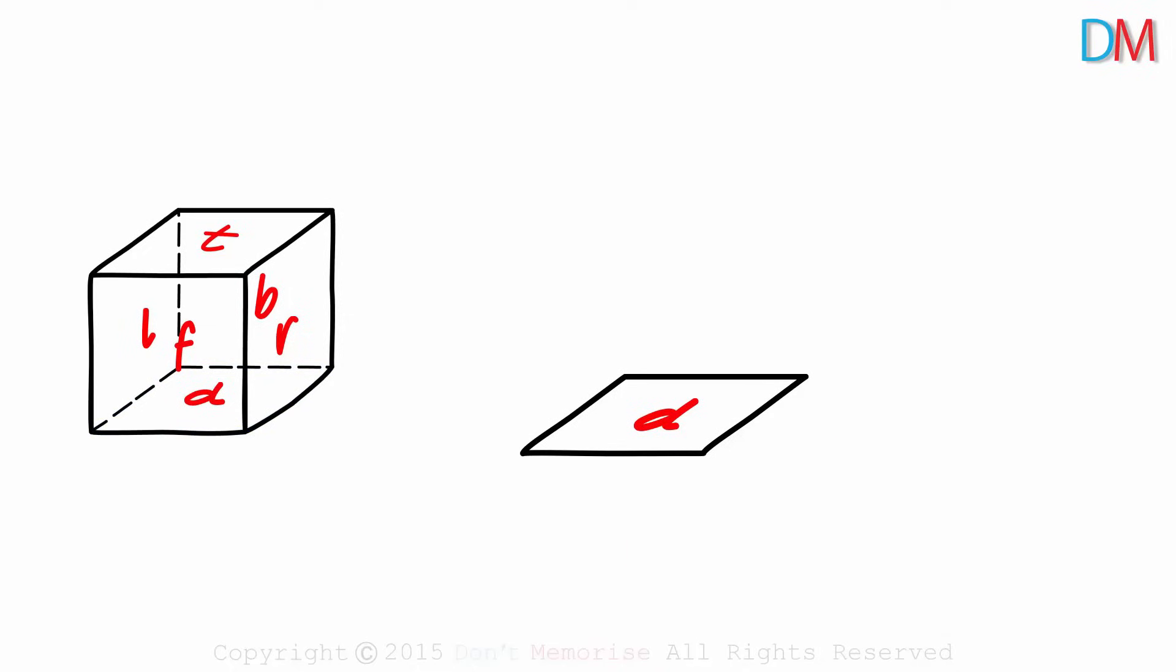Now we need to imagine as if we are opening up the figure. We can drop R and T together towards the right. Yes, we can drop the face on the right and the face on the top. R would be here and T would be here next to R.